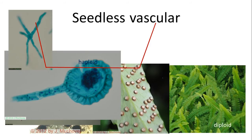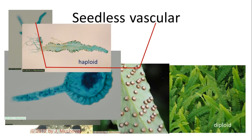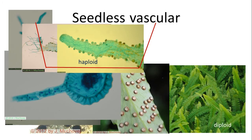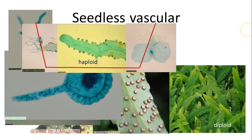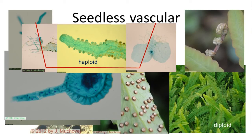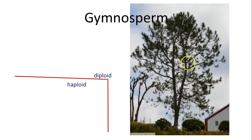When the spores get released, they germinate into tiny little plants that are almost invisible. These tiny plants release sperm cells or egg cells, and fertilization of the egg cell by the sperm cell starts to grow into a plant. You get these little fiddle heads which turn into the diploid phase. So the haploid phase, or the gametophyte, is a very short segment of the life cycle — the fern normally spends most of its time in the sporophyte phase.